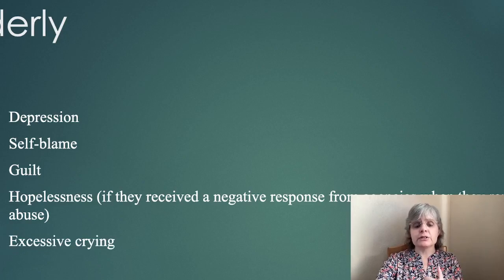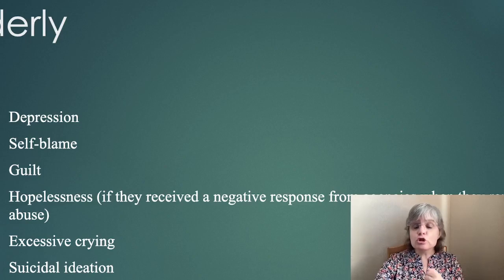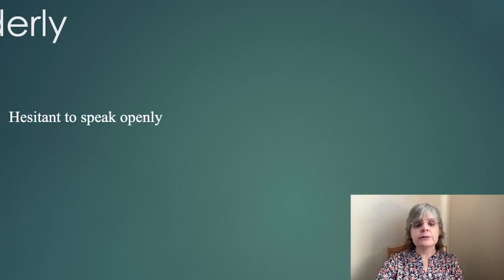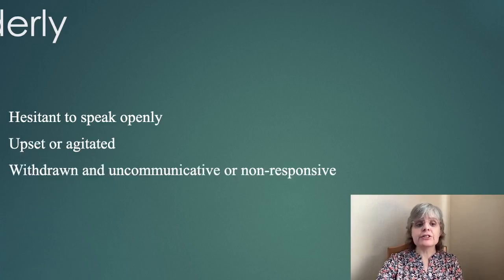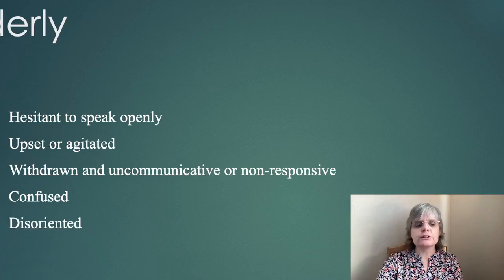Excessive crying because things are so difficult for them. Suicidal ideation: 'It would be better if I wasn't here. I'll just give up. End it all.' They could talk badly about themselves to others. They could be hesitant to speak openly, be upset or agitated, withdrawn and uncommunicative or non-responsive. Confused — trying to understand what's going on and why they've been treated this way. And disorientated.